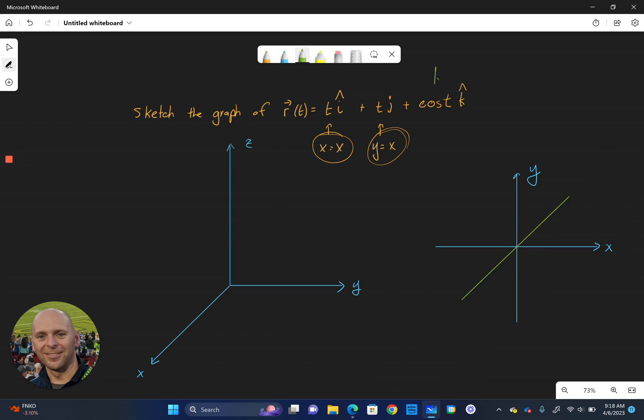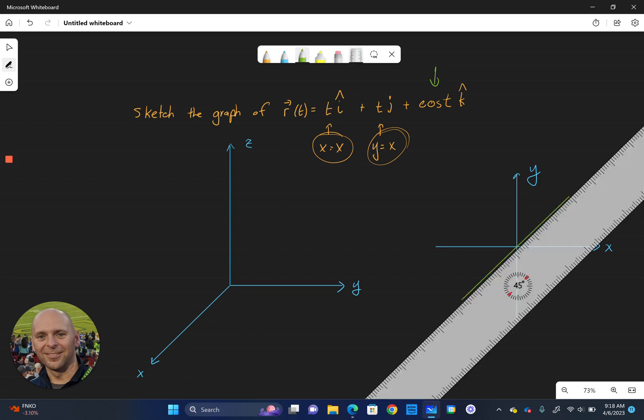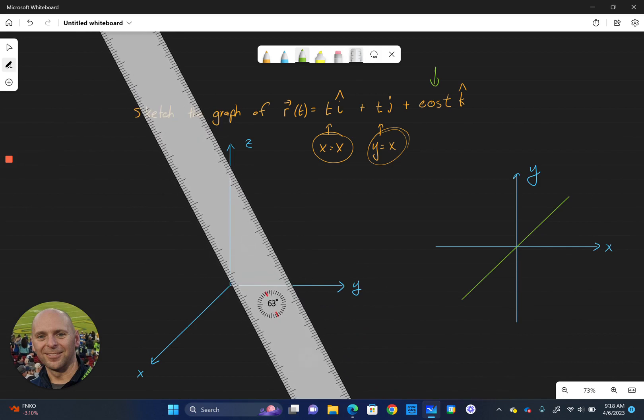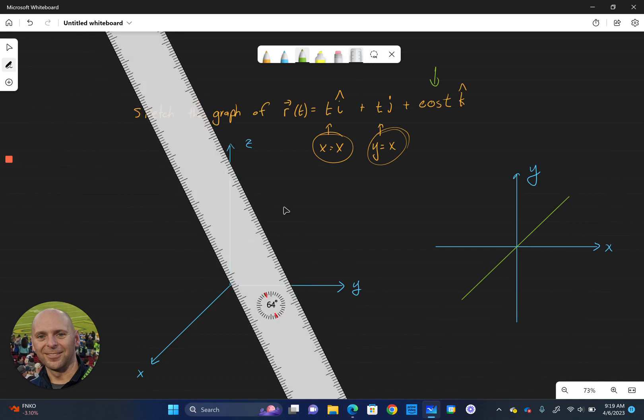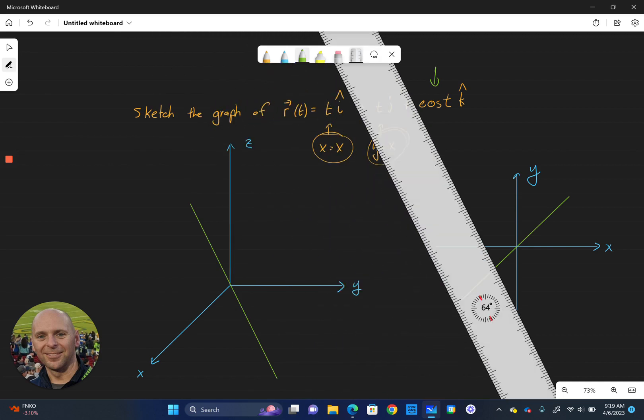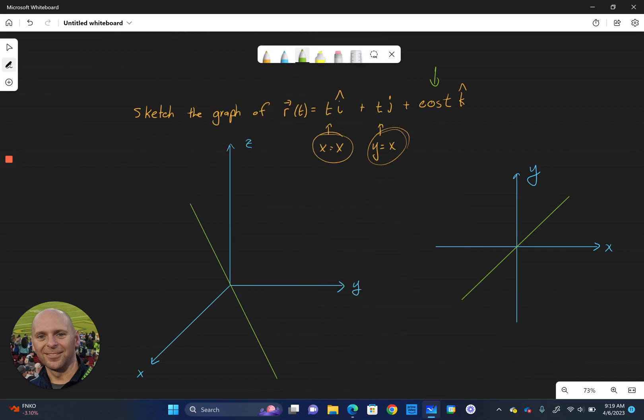And then what you can see here, looking at the z component, tells us what's happening vertically. So vertically, it's behaving like a cosine function. In the xy plane over here in our three-dimensional graph, we've got the line y equals x happening, something like this.